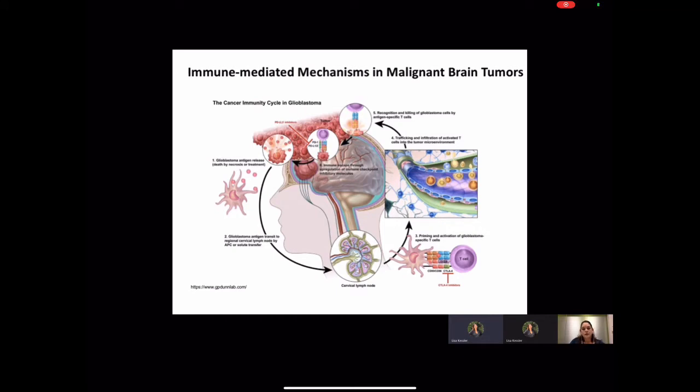Doctors Dunn and Johans hypothesize that the tumor releases antigen that transits to the cervical lymph node where dendritic cells process and prime the T cells. Chemokine signals thereby recruit the activated T cells to the tumor microenvironment where they hopefully will kill the tumor cells.